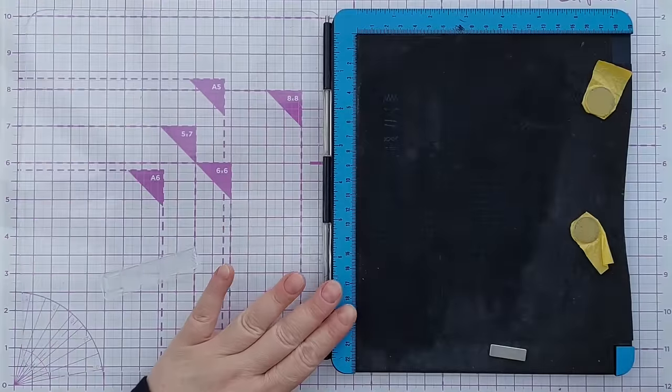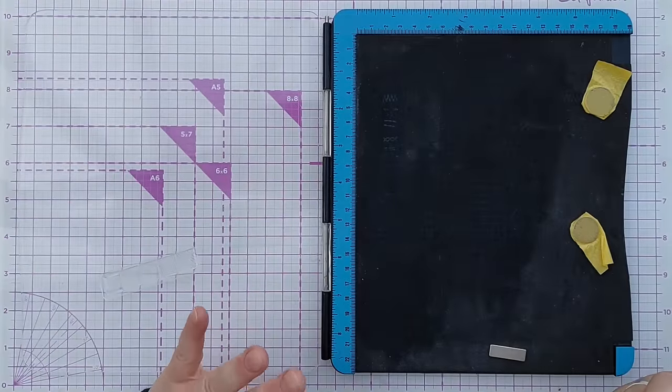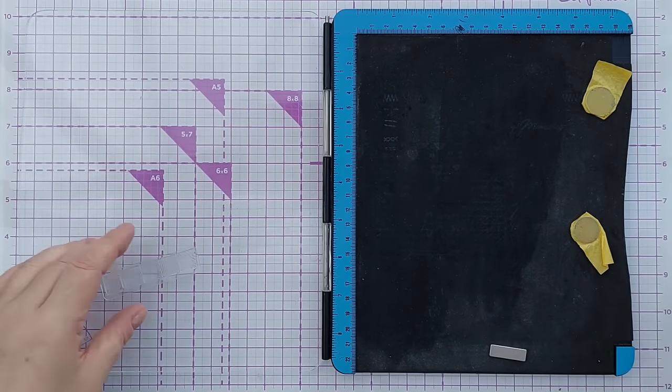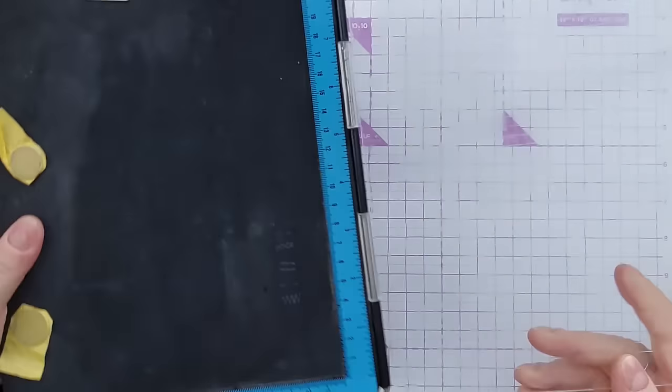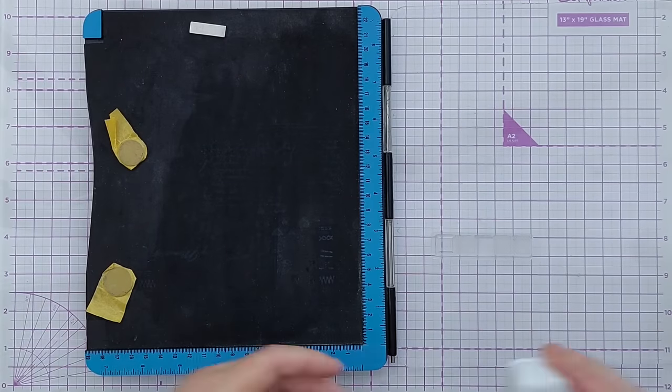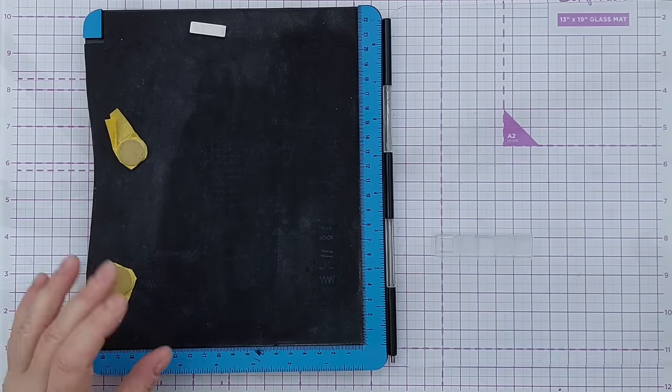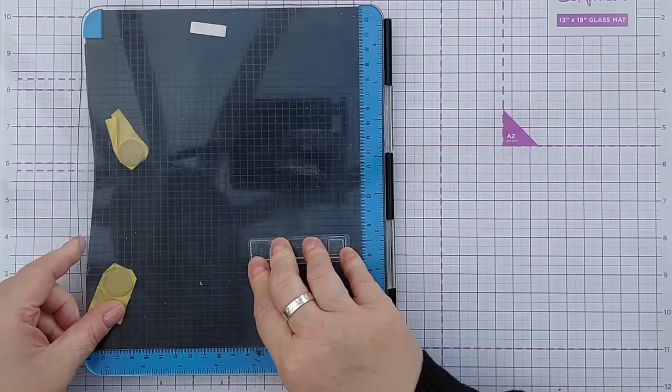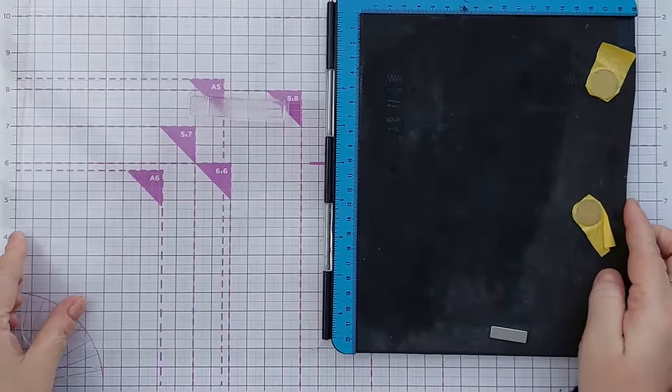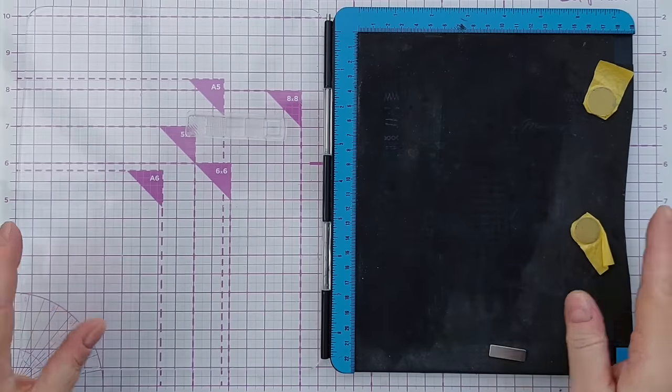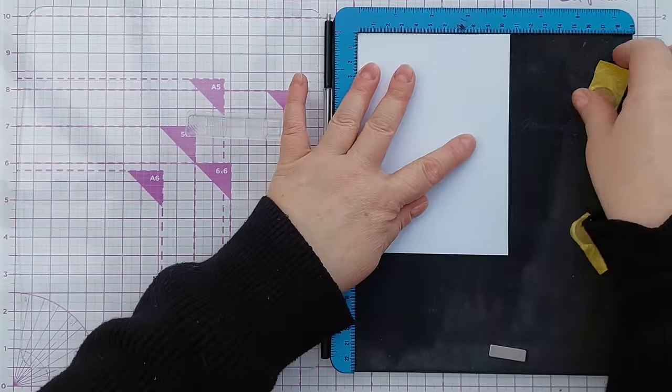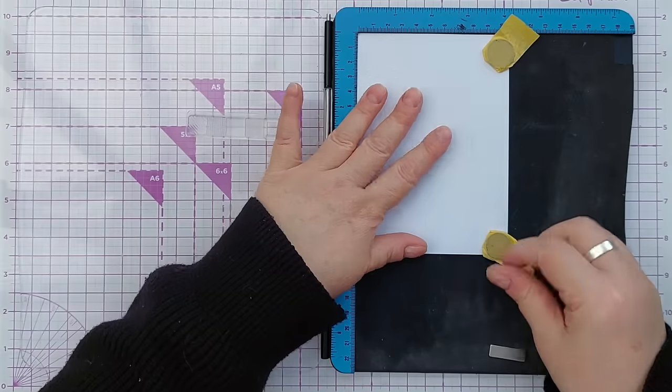I'm going to use my stamp positioner today to do some repeat stamping again. When I use my stamp positioner normally, I have it this way up with the door over here so that I can easily ink up with my right hand and then press it down like that. But when I'm doing repeat stamping as I did in the previous video and I'm going to do right now, I have my stamp positioner the other way up so that I can move my paper towards me.